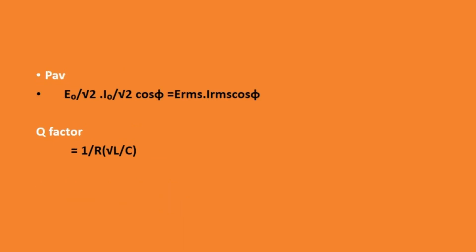Next is average power in an AC circuit: Pav equal to (E-naught by root 2)·(I-naught by root 2)·cos phi, or E-naught·I-naught by 2·cos phi, which equals E-RMS·I-RMS·cos phi. Here E-RMS·I-RMS is called the apparent power, and cos phi is the power factor. Finally, the Q factor is written as 1 by R times the square root of L by C. That's all friends, thank you.